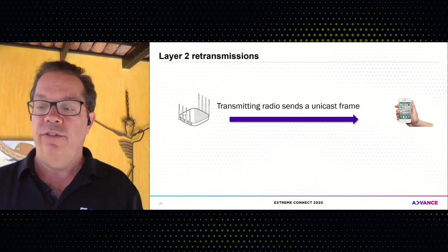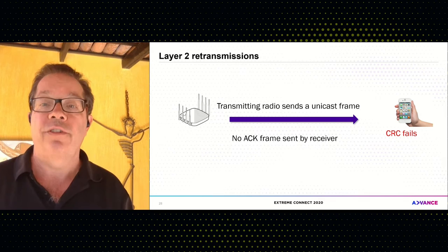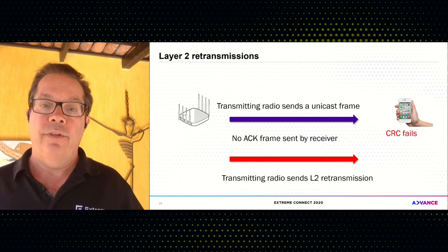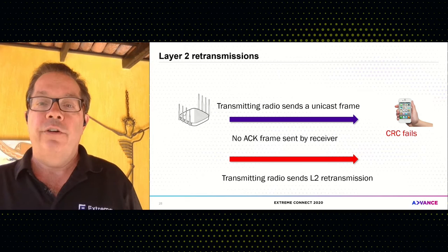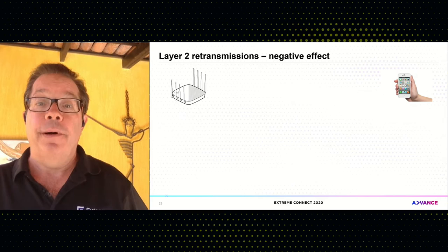What happens if it fails? If the transmitter sends a unicast frame and the CRC fails, no ACK frame is sent by the receiver. What has to happen then? A layer two retransmission from the transmitter. There is always a certain amount of layer two retransmissions, but layer two retransmissions cause a lot of problems in terms of performance in Wi-Fi networks.